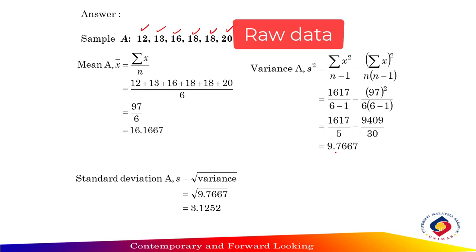So equal to 9.7667. And then the standard deviation is equal to square root of variance. So square root 9.7667 equals 3.1252.